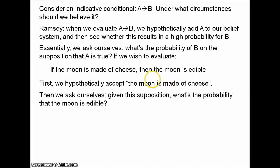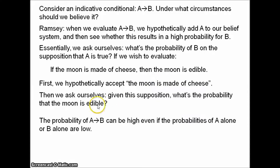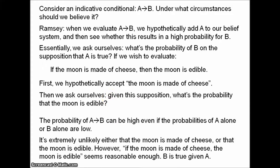As you can see, if A then B can be assigned a high probability even if the probabilities of A alone or B alone are low. I think it's extremely unlikely that the moon is made of cheese, and it's extremely unlikely that the moon is edible. But 'if the moon is made of cheese, then the moon is edible' seems true to me — B is true given A; it's true on the supposition of A. With that said, here is Stalnaker's Hypothesis.